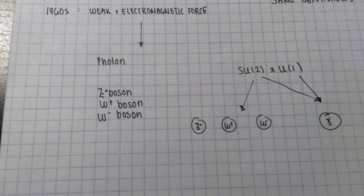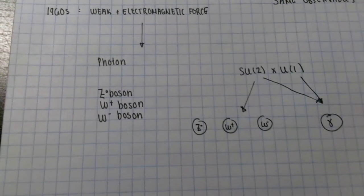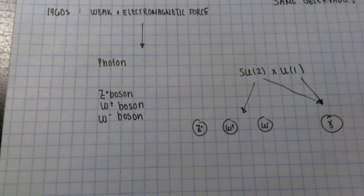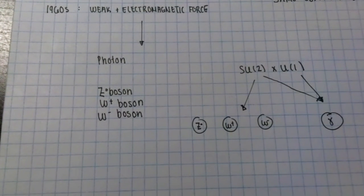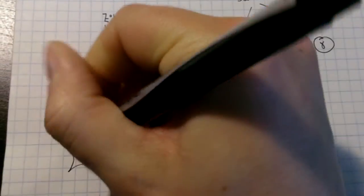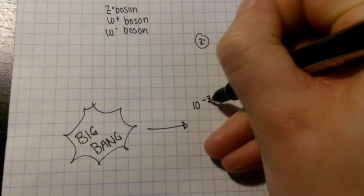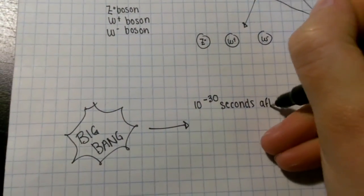So how come the two interactions do not look the same in everyday life? You can have electromagnetic phenomena, like a bright lightbulb, without having beta decay. Well, for the electromagnetic and weak forces to look the same, you need a very energetic environment, like the one fractions of fractions of fractions of seconds after the Big Bang.